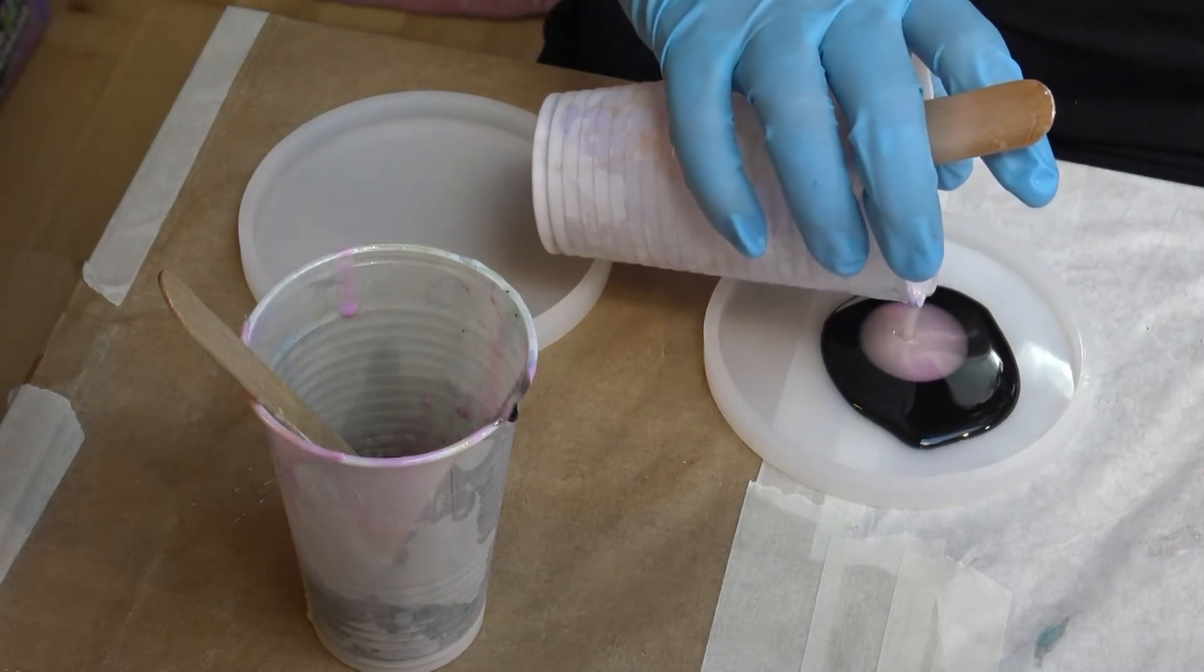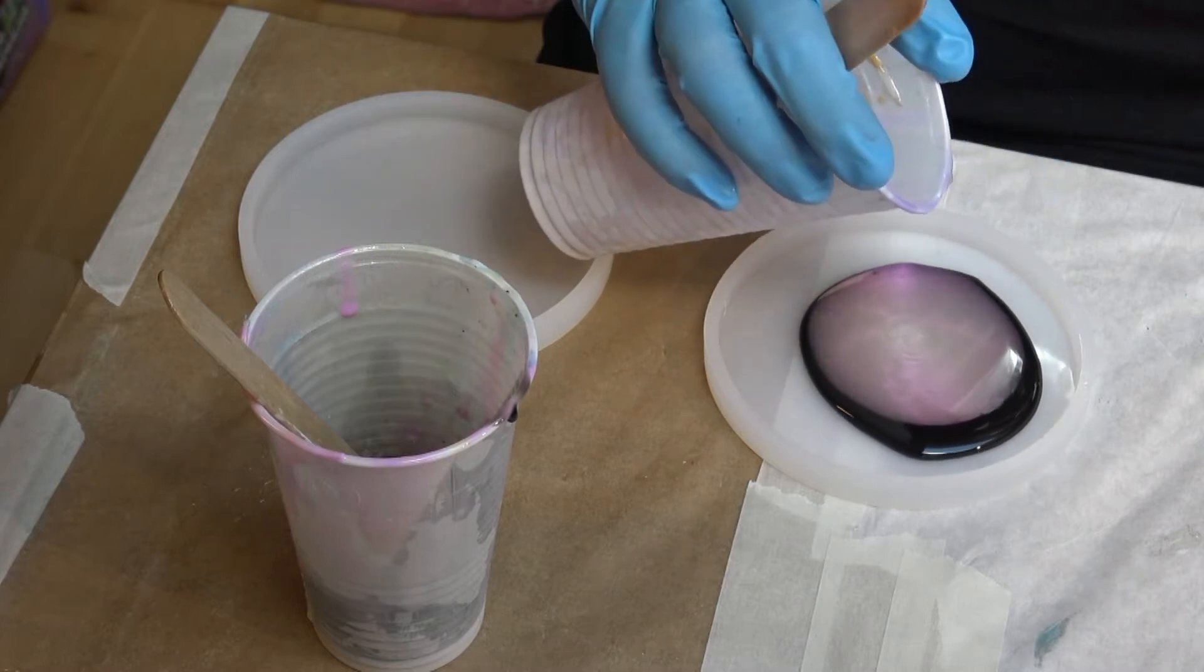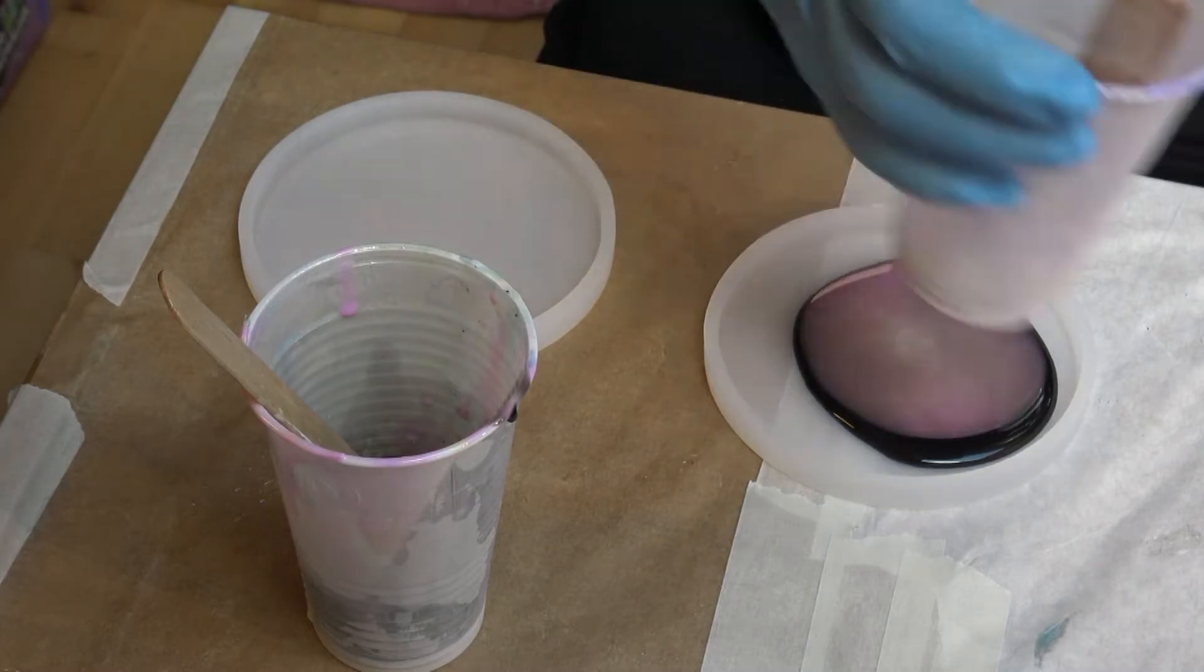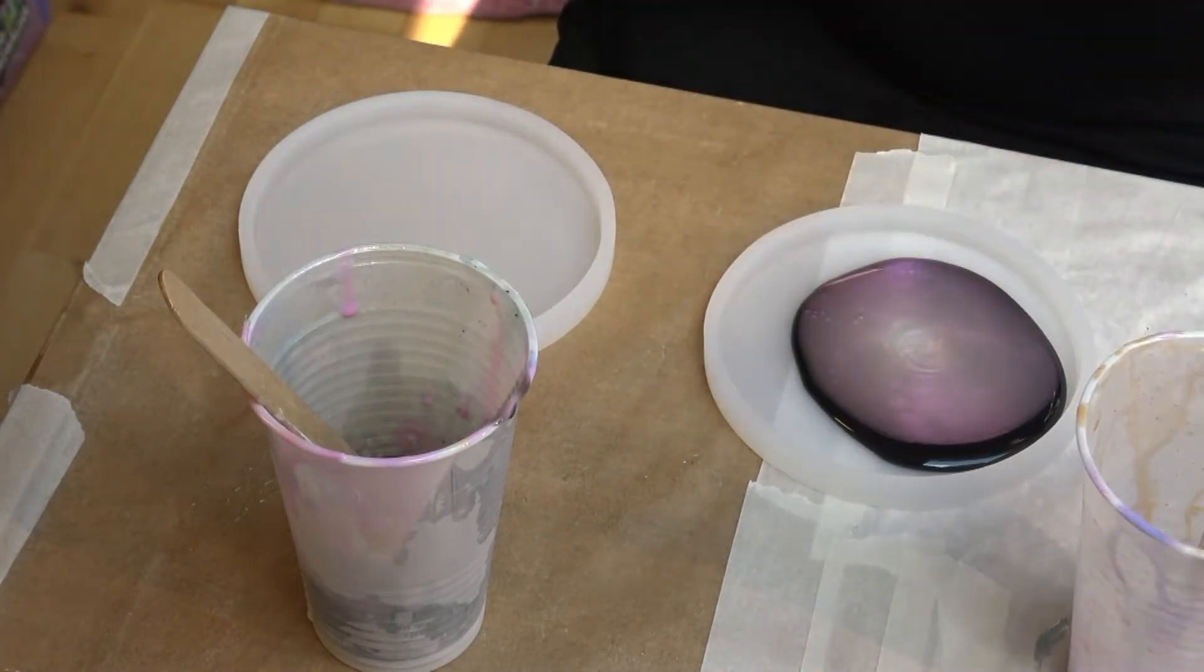And then I have the mica powder. This is an interference white. As you can see, it has a purple shimmer to it.